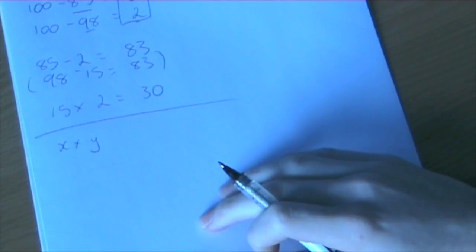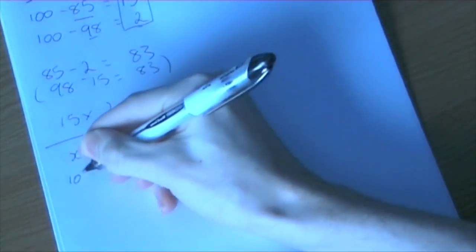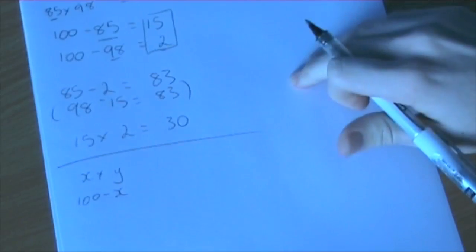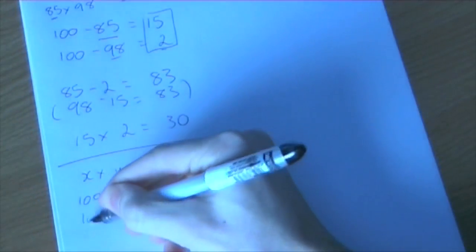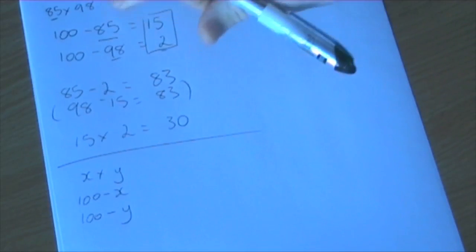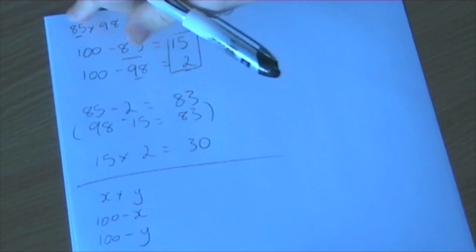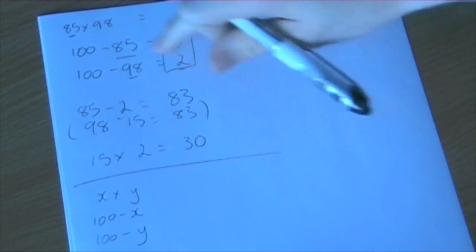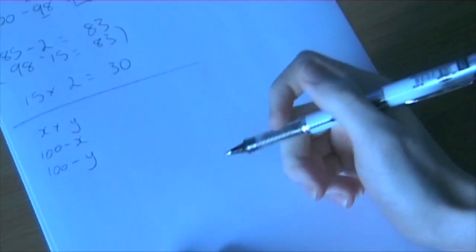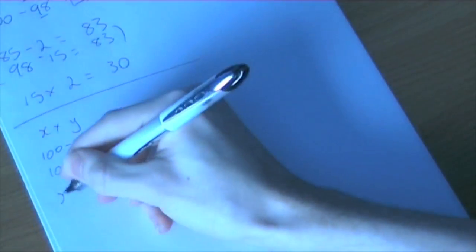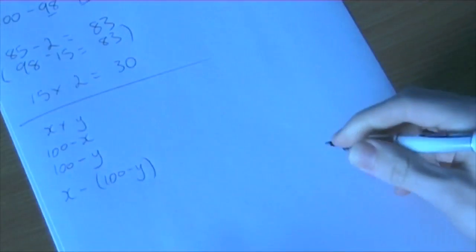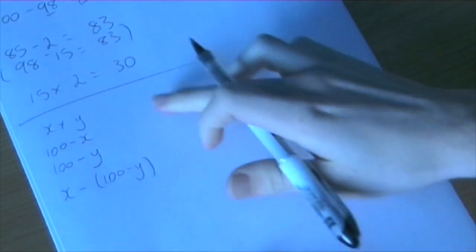So with algebra, that would become 100 minus x. Then I did 100 minus 98. So that would become 100 minus y. Then I did the 85, or I should point to the first one, 85 subtract 2, which was the second subtraction I did. So that becomes x subtract (100 minus y). And that gets us the 83.